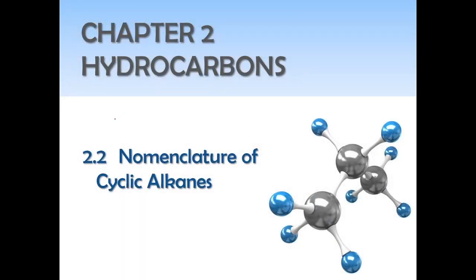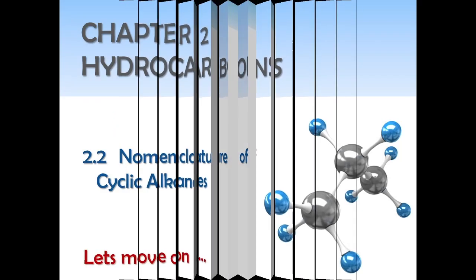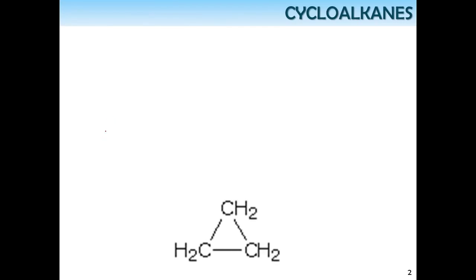Assalamualaikum and hello to all. We are going to proceed to 2.2 nomenclature of cyclic alkanes. Cycloalkanes are also known as cyclic or closed chain alkanes. This example has three carbons, so this one is actually cyclopropane.